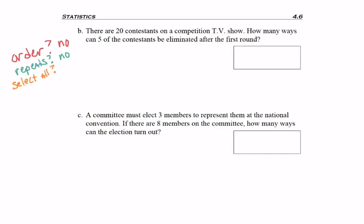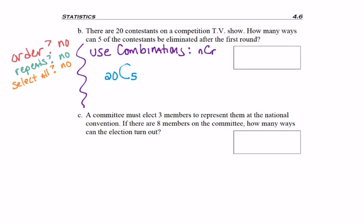Are we selecting everybody? We are eliminating five people, which is more than one, but there were 20 contestants — so no, we're not selecting everyone. Therefore, we'll use combinations written nCr, where we have 20 choose 5: 20 contestants, choose 5 to eliminate, order doesn't matter, and we get 15,504. I just used the built-in nCr button on my calculator.